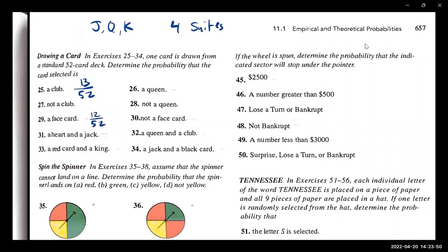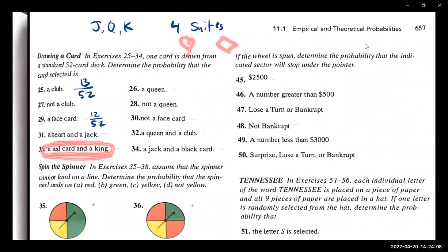Let's try a red card and a king. How many red king cards are there? Just two. There's one heart king and one diamond king. So there are only two kings that are red out of 52 — two out of 52.